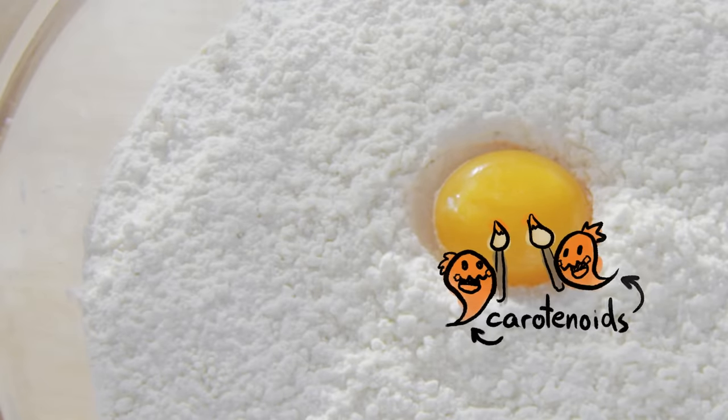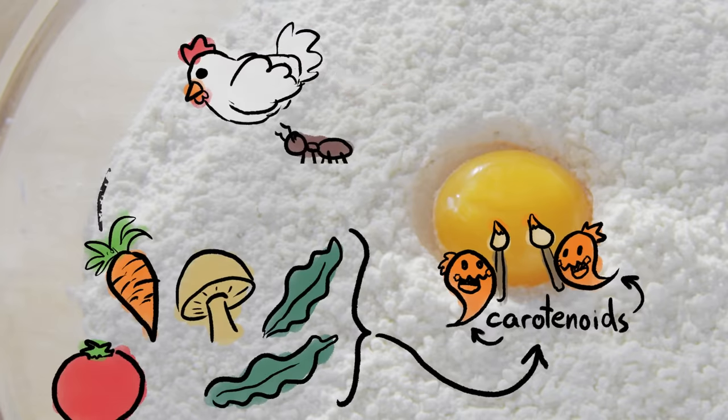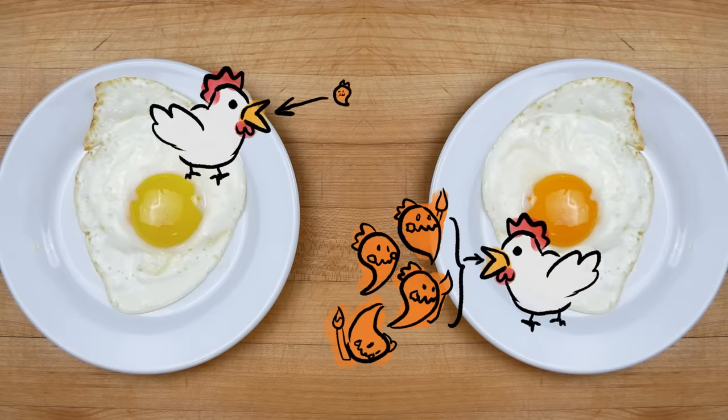See, an egg yolk's color comes predominantly from carotenoids, a group of pigments produced by lots of living things. Except animals, which get carotenoids from stuff they eat. The more carotenoid-rich foods a hen gobbles up, the darker yolked eggs she'll lay.